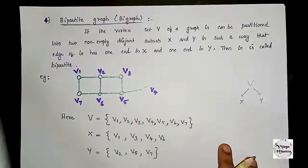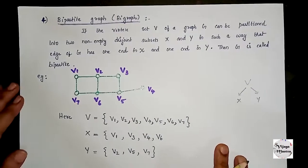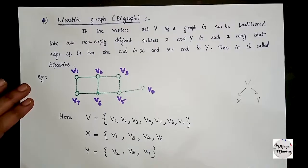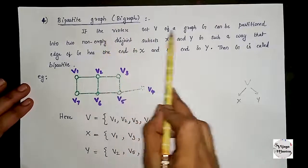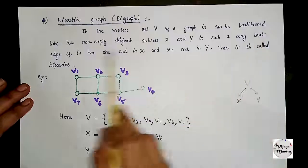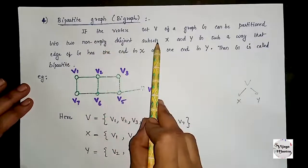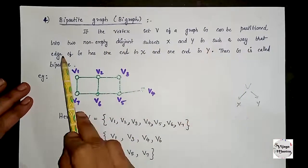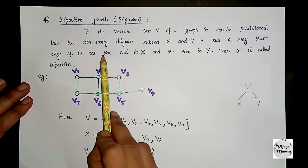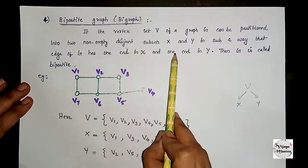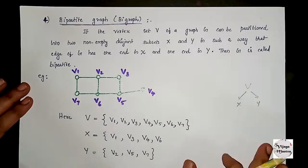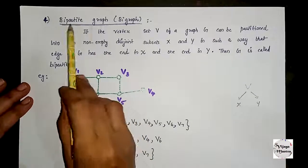The next type of graph is the bipartite graph, also called a bigraph. The vertex set V of graph G can be partitioned into two non-empty disjoint subsets X and Y such that every edge of G has one end in X and one end in Y. Then G is called a bipartite graph.